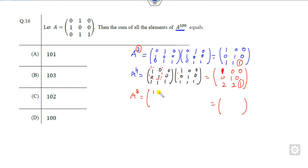So this is 1 0 0, 0 1 0, 2 2 1. Now once you will multiply them it will be 1 0 0, 0 1 0, 4 4 1. Now what is the meaning of A^100?